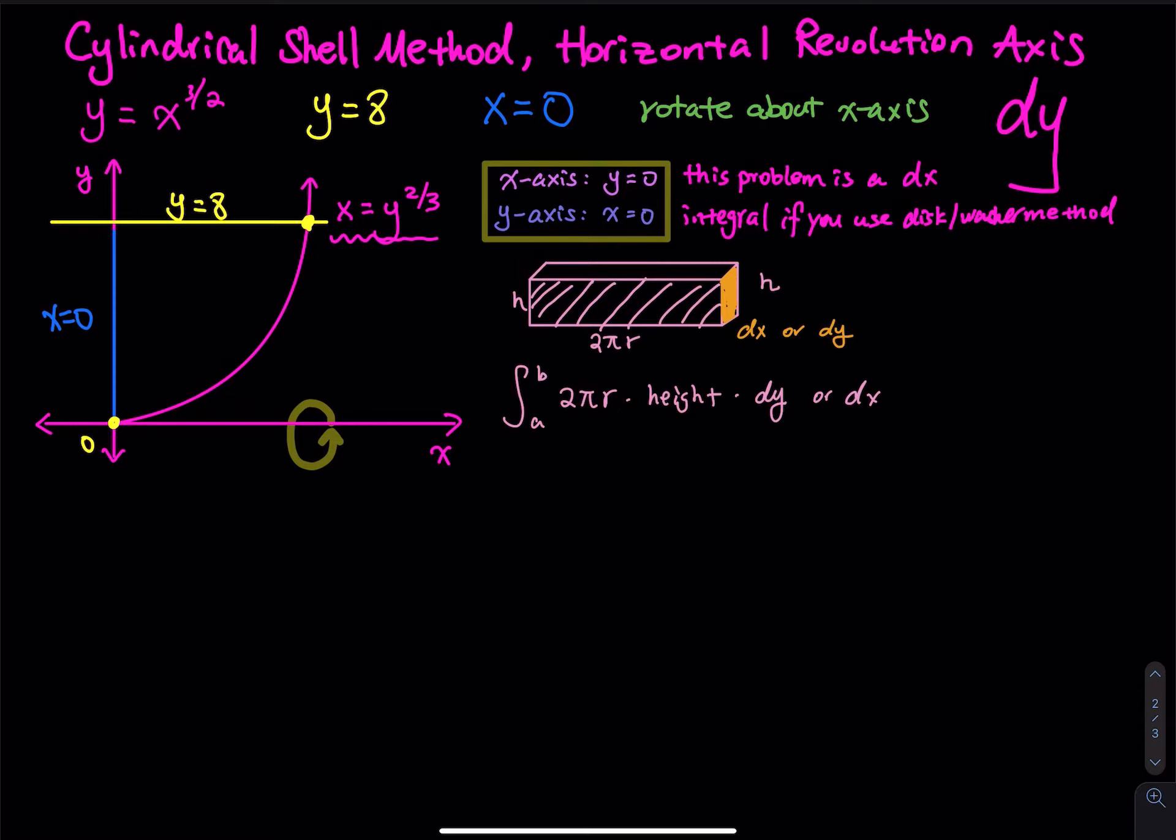Sometimes we use top minus bottom to measure the height. Sometimes we use right minus left, depending on the problem. And then the dy or dx, so once you have 2πr times h, we have a 2D rectangle. Once you mention the dx or dy, you have to add some thickness to the rectangle. So the 2D rectangle becomes three dimensional. The rectangle goes from y equals 0 to y equals 8. Let's start.